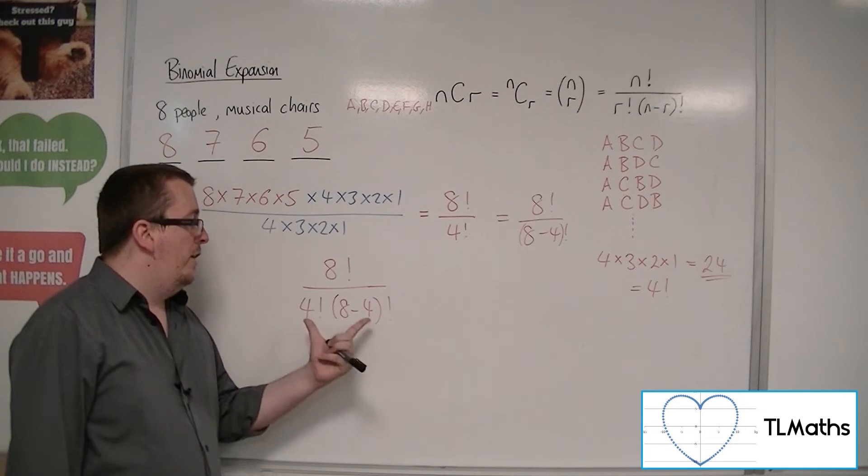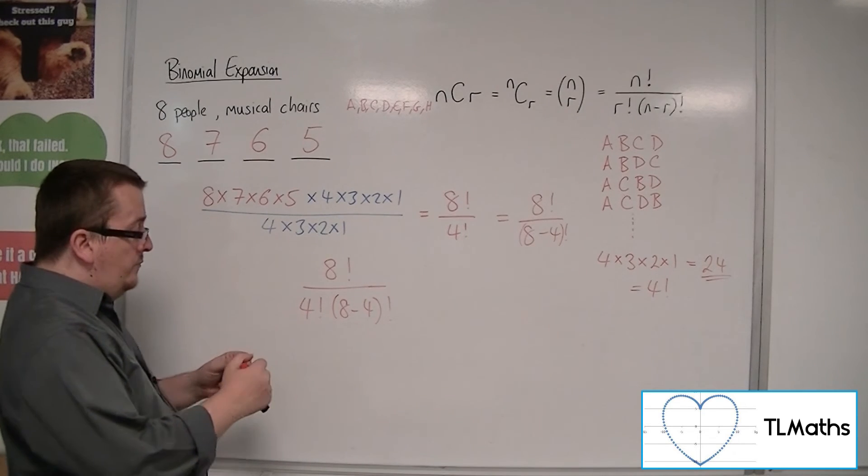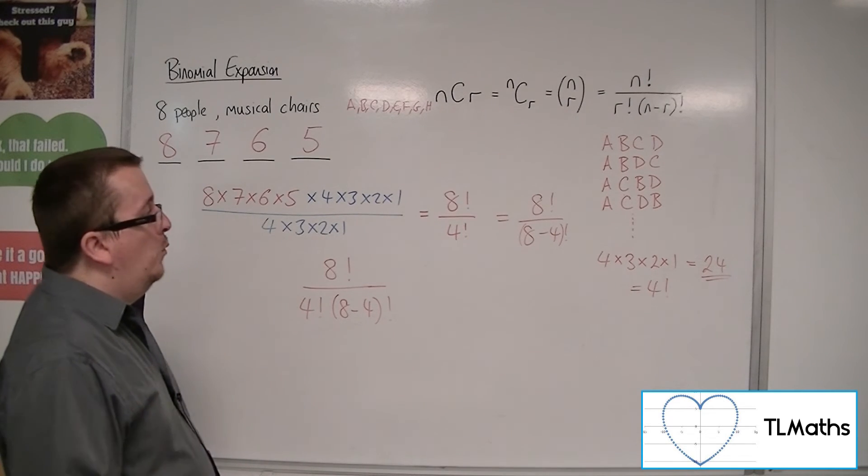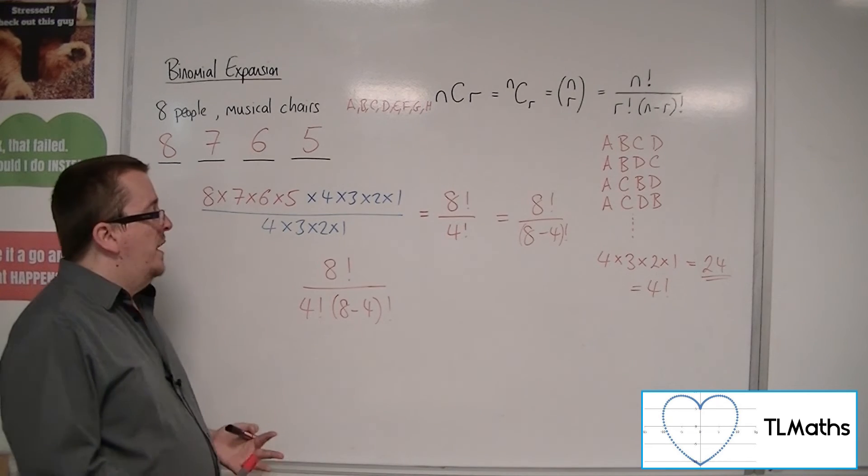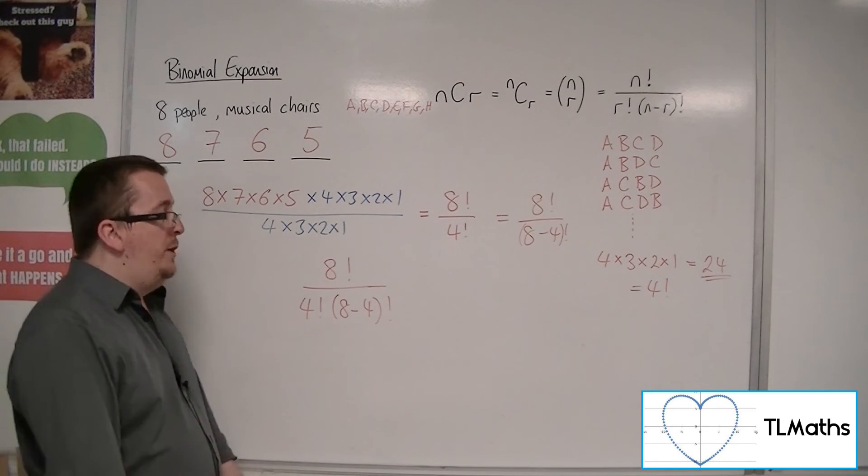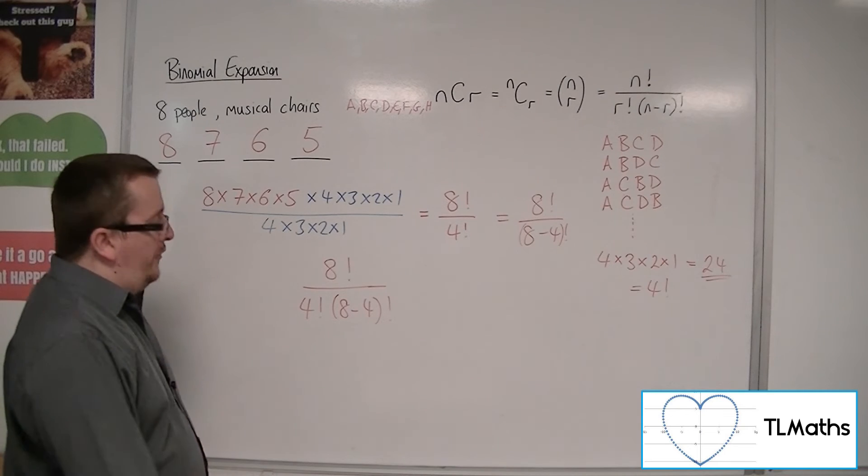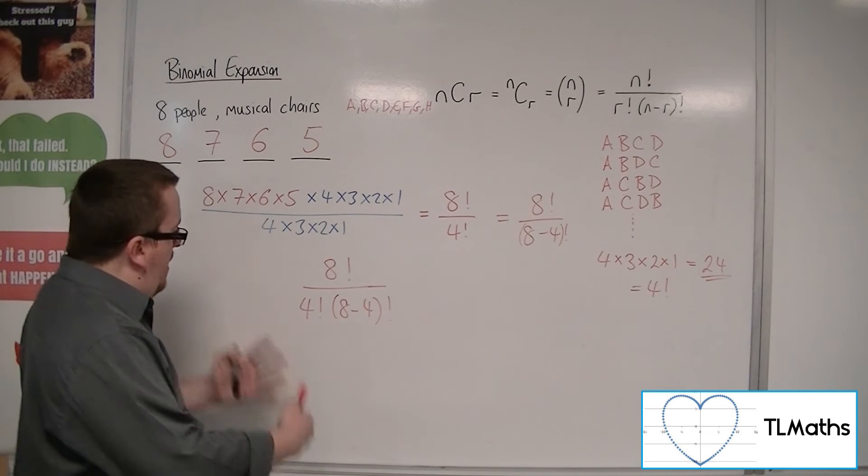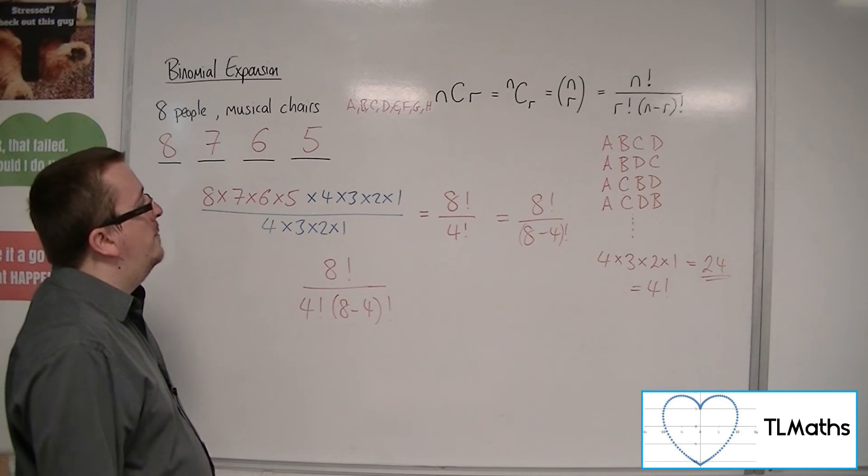And so this is how many actually I need. This is the number of different ways that I could end up with what I would refer to as different results after this round of musical chairs. And that's what I'm interested in. And that is where this NCR formula is coming from.